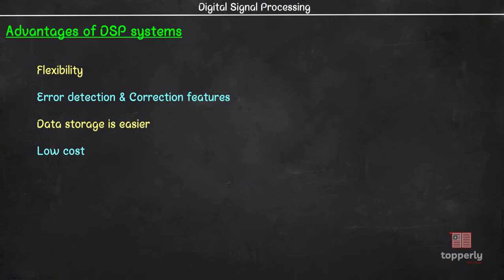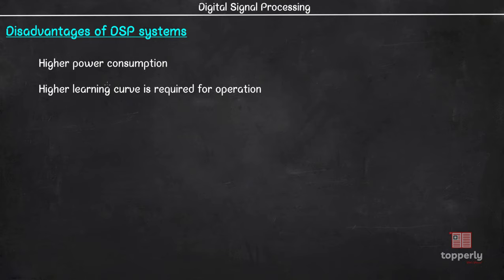Now coming to the disadvantages of DSP systems. DSPs are made out of a lot of transistors and these transistors together consume a lot more power than analog signal processors. Another problem is the higher learning curve required for the operation of DSP systems. Each DSP has different hardware architecture and software instructions. Due to this, highly skilled engineers are needed to program the device and proper training on DSP is required for programming for various applications.